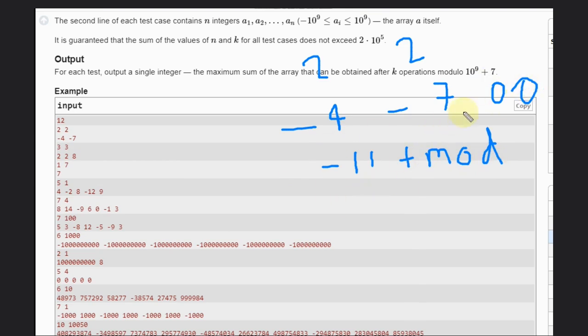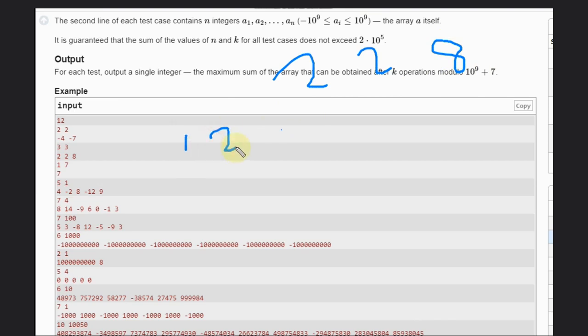Let's see another case for better understanding. We have 2, 2, 8. Everything is positive and the maximum sum possible is 12, right? So what we can do? The maximum sum possible is 12, we can add it.